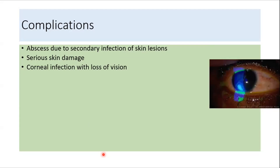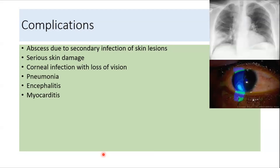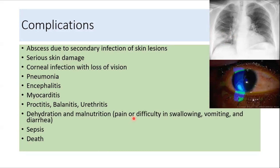Mpox can cause various complications, including abscess due to secondary infection of skin lesions, serious skin damage, and sometimes corneal infection leading to loss of vision. It can also cause pneumonia, encephalitis, myocarditis, proctitis, balanitis, and urethritis. Due to difficulty swallowing, vomiting, and diarrhea, there can be dehydration and malnutrition, and patients can even develop sepsis and die.